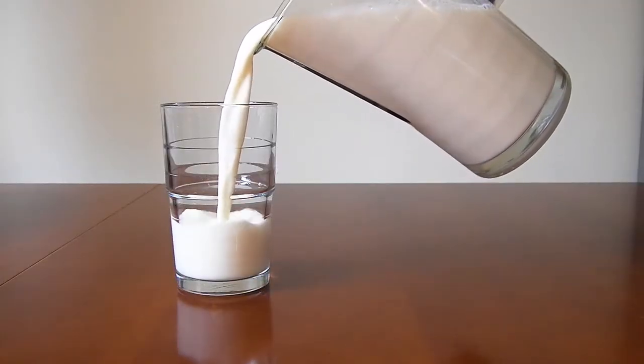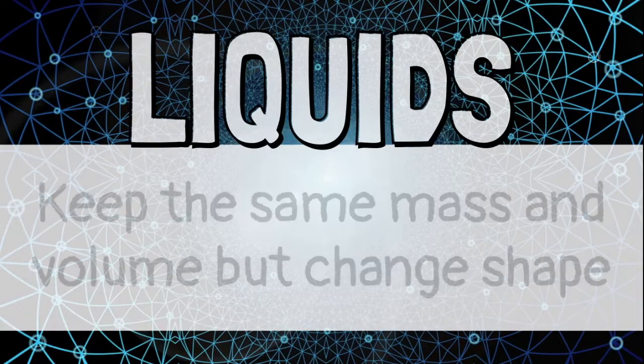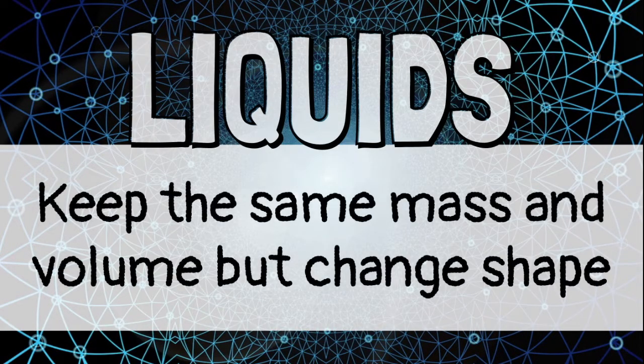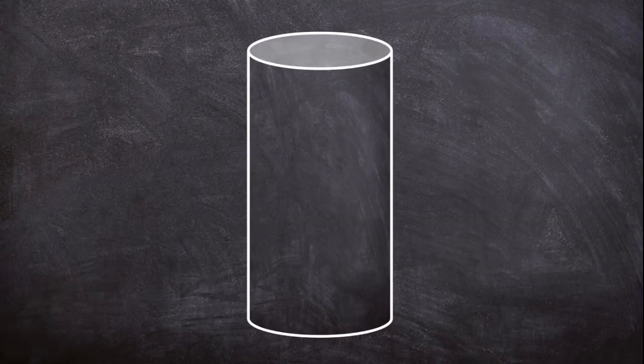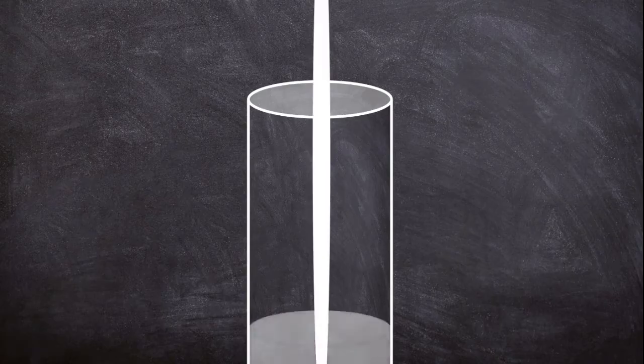Water, milk, and juice are examples of matter in a liquid state. They keep the same mass and volume, but can change shapes. The atoms are still close together, but they can move around.